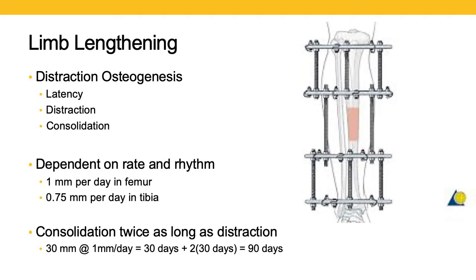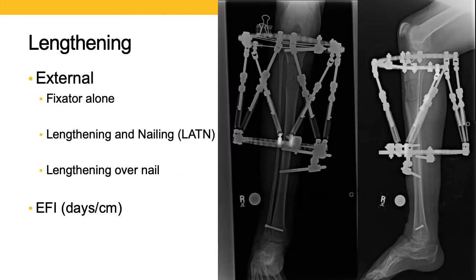When calculating how long this process is going to take, a good rule of thumb is that the consolidation phase generally takes twice as long as the distraction phase. For example, if you were going to lengthen a patient 30 millimeters at one millimeter per day, that would be 30 days of distraction. The consolidation phase would then take 60 days, giving you a total of 90 days until the patient might be sufficiently healed. Adding in a latency period of maybe five to seven days in the femur, and you're looking at close to a hundred days for a 30-millimeter discrepancy.